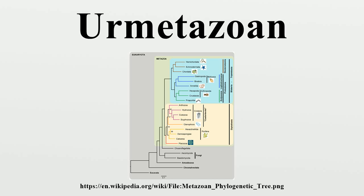The name comes from the posterior location of the flagellum in motile cells, such as most animal spermatozoa, whereas other eukaryotes tend to have anterior flagella.